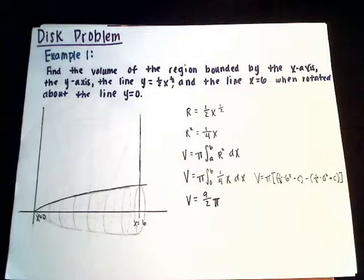The disc method is used to find the volume of a solid of revolution, the end result of revolving a region about a line. The simplest solid of revolution defined is the disc, so we'll begin with that.